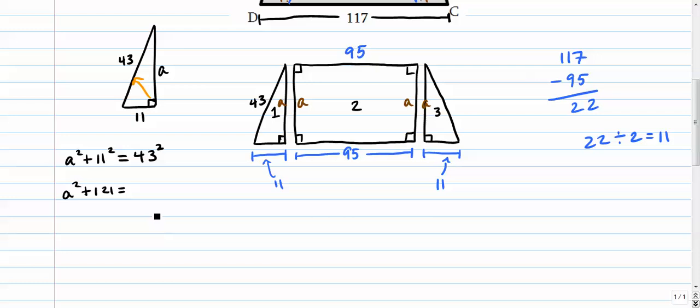We get 121, 43 squared. I don't know what that one is. I'll hit my calculators quickly here. 1849. And we want to subtract 121 from both sides. That's 1728. That makes sense.